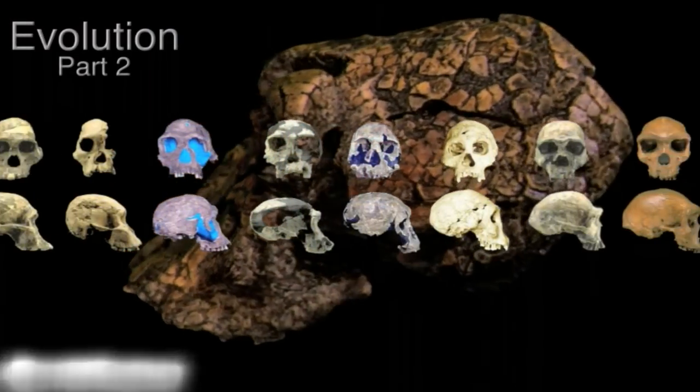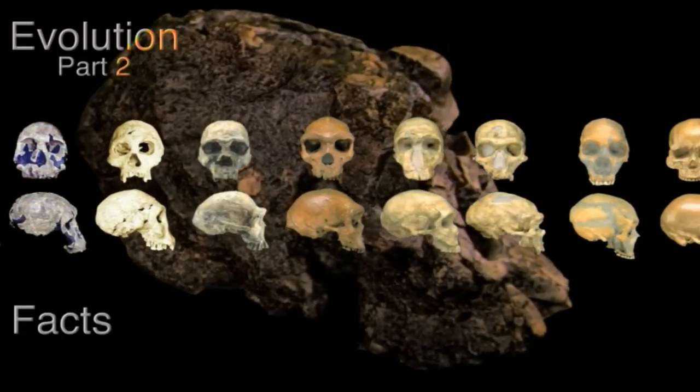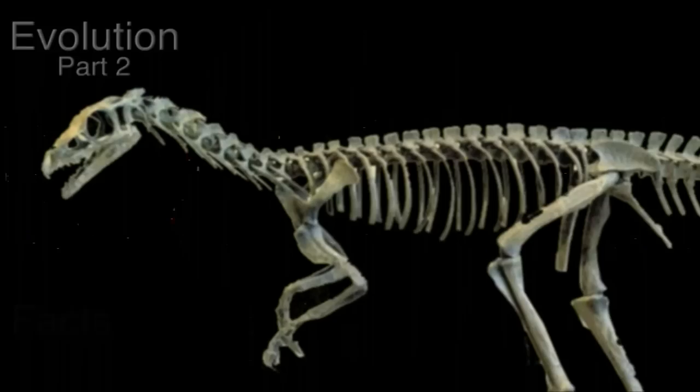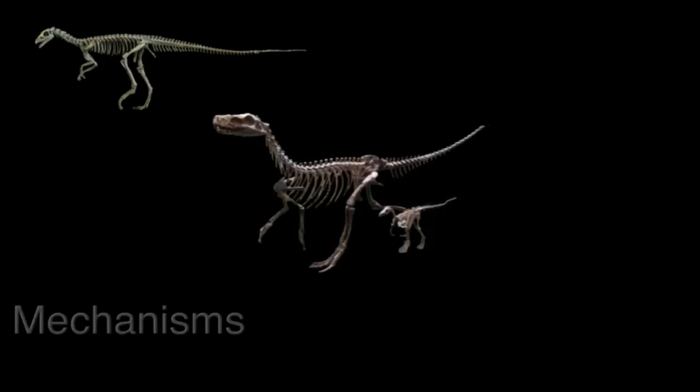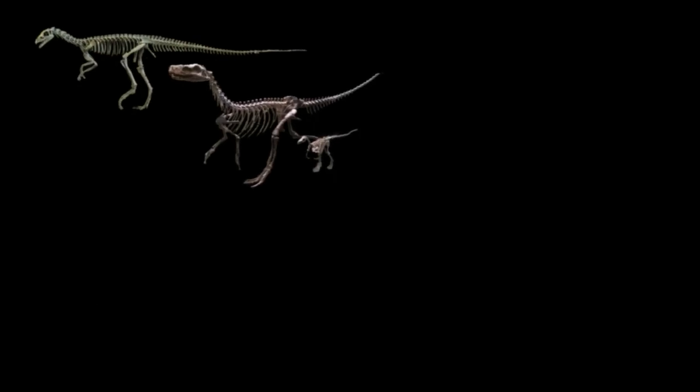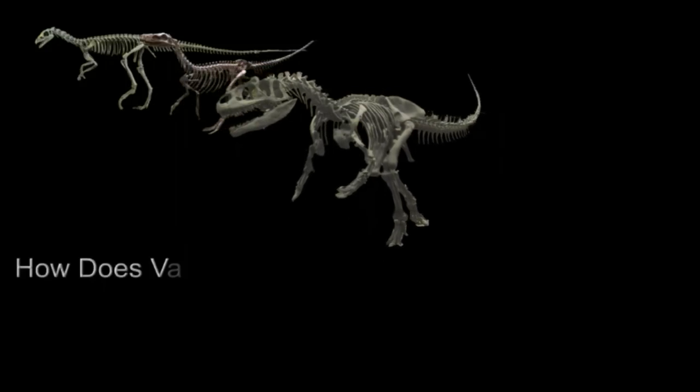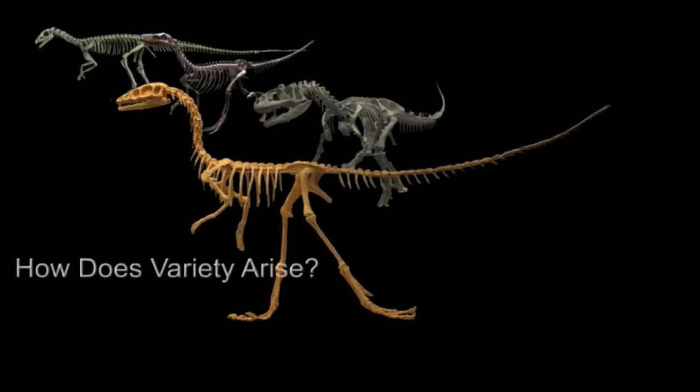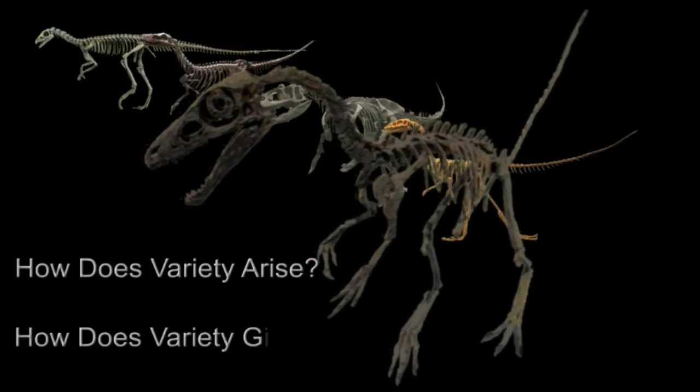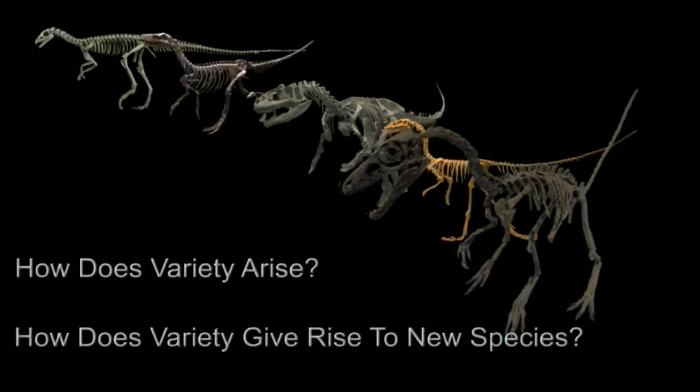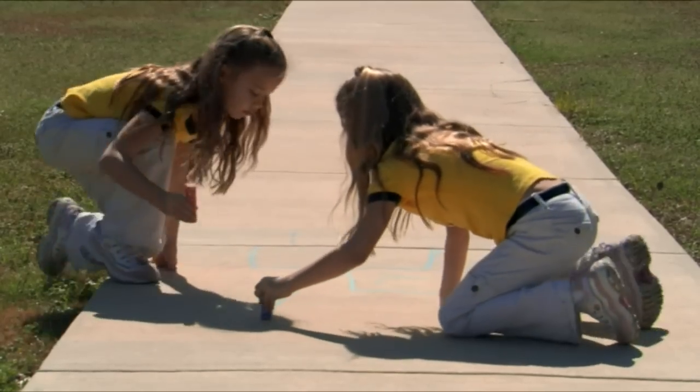In part one of our story of evolution, we demonstrated the facts of evolution. In part two, we will explore the mechanisms. To do that, we need to ask and answer just two questions: how does variety arise in the genomes of individuals in a group, and how does that variety give rise to new species? The first question